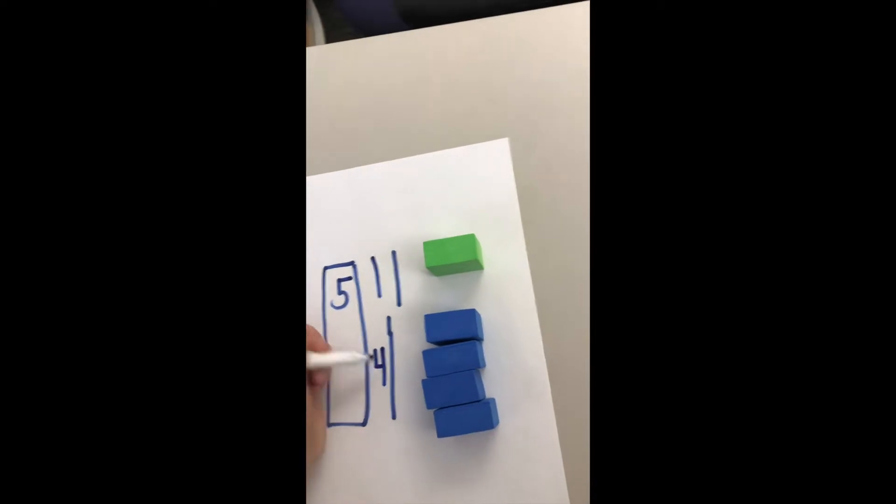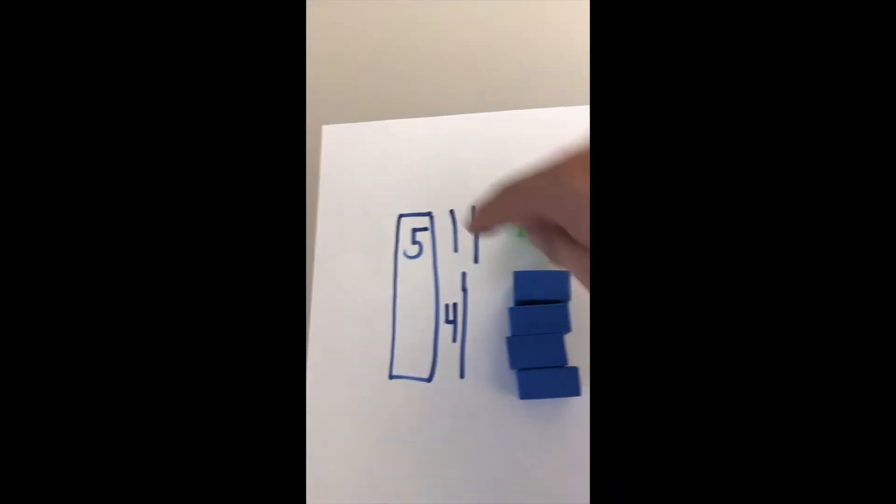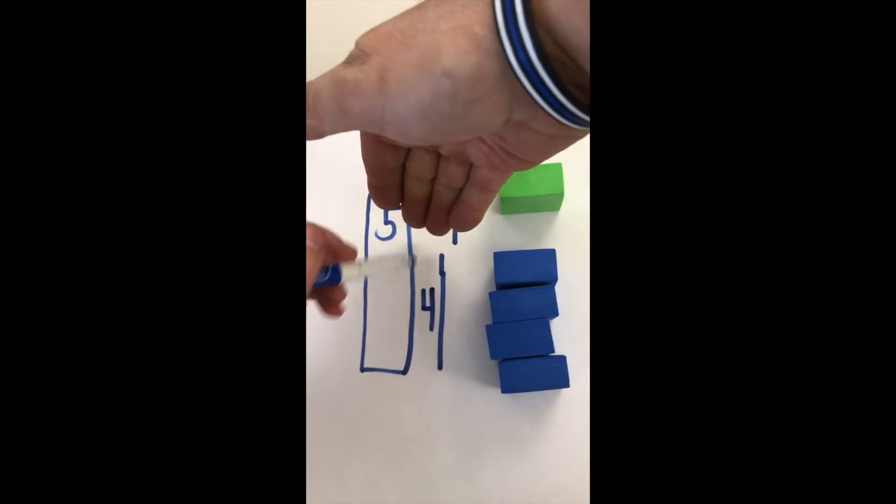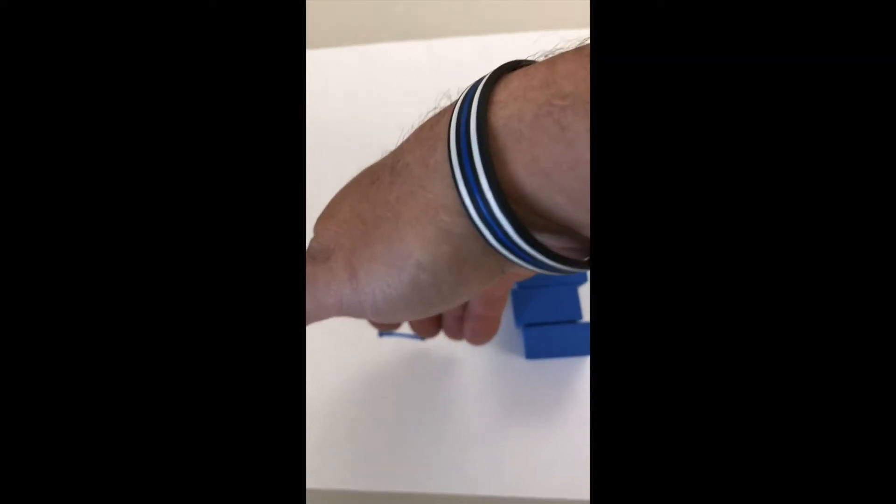Can you give me a subtraction sentence? Start here. Five minus one equals four. Good. Give me a plus sentence. Start here. Four plus one equals five.